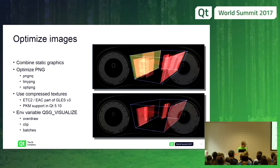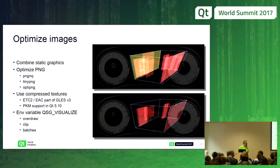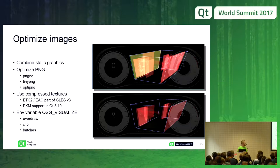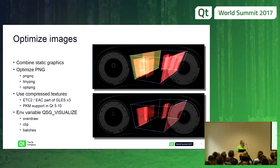There are also useful scene graph visualization tools. Using the QSG_VISUALIZE environment variable you can see overdraw, clipping, and batching. For overdraw — the less color you see, the better. For batching, Qt tries to merge all draw calls into one batch, and the result is shown as either colorful images or one plain color — again, the less color variation, the better. These tools help understand rendering complexity.